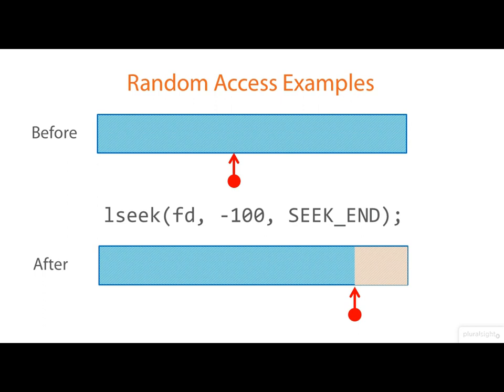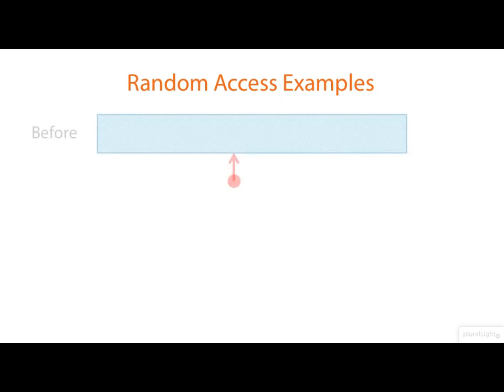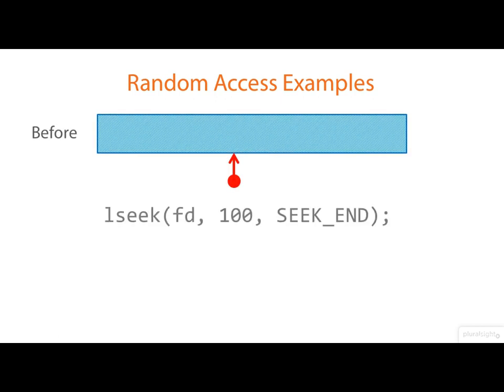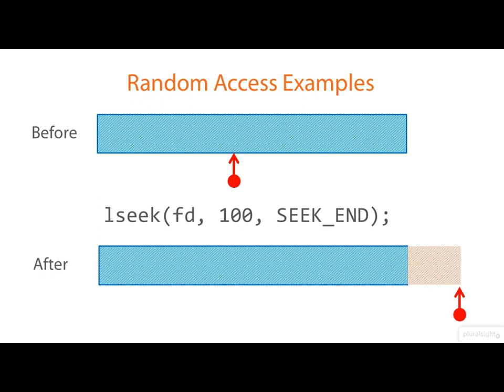Now what happens if we specify a positive offset relative to the end of the file? Is this an error? Actually no. What happens is that the file is conceptually extended. If you tried to do a read at that point, you'd get end of file back immediately.